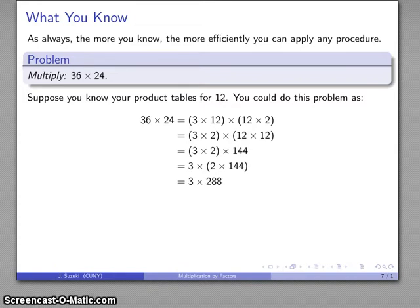So times 2 times 3, here I'm applying the distributive property, 3 times 288, that's 3 times 200, 3 times 80, 3 times 8, and I'll add those together, 864.